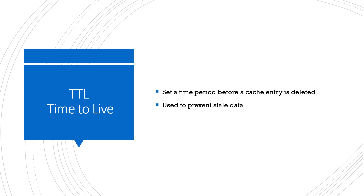The first major eviction mechanism is TTL — time to live. This lets you set a time period after which cache entries are deleted automatically, mainly used to prevent stale data. The time you set depends on how essential it is for data to be fresh. A blog post is rarely updated so you could set a longer cache time. Tweet like counts can tolerate a few seconds or a minute of stale data — no one's life depends on the exact like count. But for something like healthcare data such as a heartbeat or breathing rate, you probably don't even want to cache it because a delay could be life-threatening.